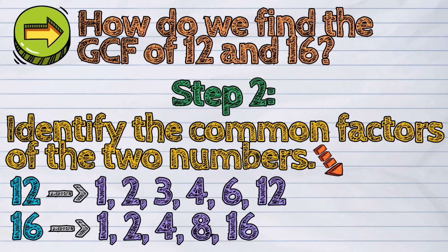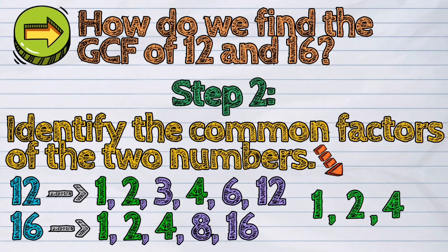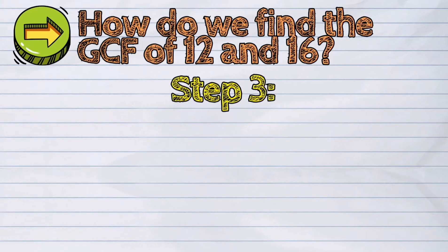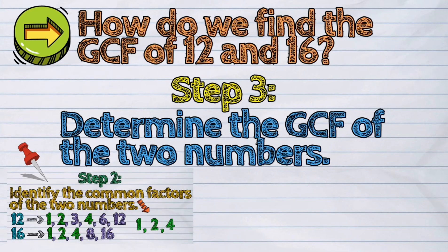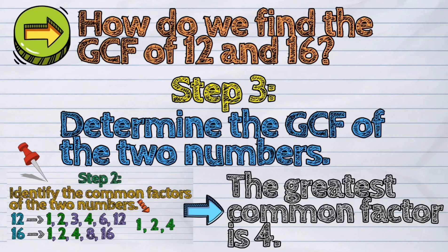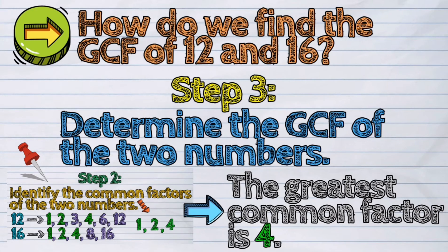The common factors of 12 and 16 are: 1, 2, and 4. And the third step is to determine the GCF of the two numbers. The greatest common factor is 4.